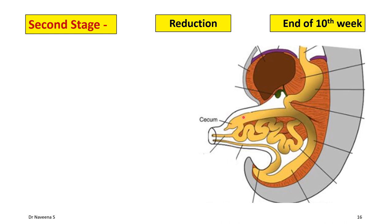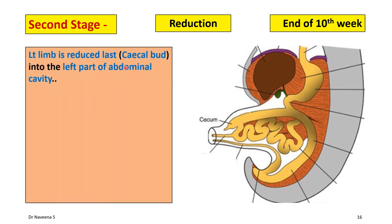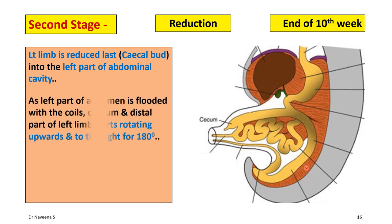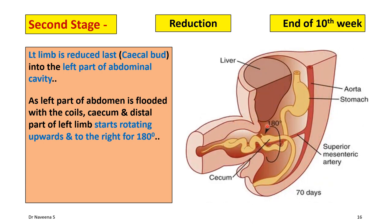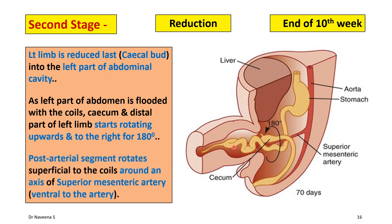Now it is time for reduction of the left limb or post-arterial segment, which is last to re-enter the abdominal cavity. Specifically, it is the cecal bud which enters the abdomen last. Once it re-enters, it occupies the left part of the abdominal cavity. As the left part is already occupied by coils of the pre-arterial segment, the cecum and distal part of the left limb search for free space and start rotating upwards towards the right side for 180 degrees, around the superior mesenteric artery, superficial to the coils of the pre-arterial segment and ventral to the artery.